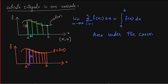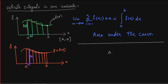Each sub-interval has width delta x, and its height is f of x. So the area of one rectangle is delta x multiplied with f of x.